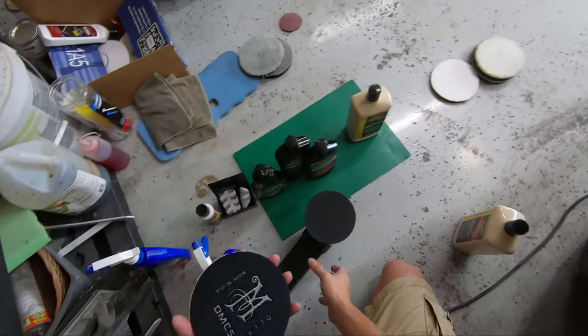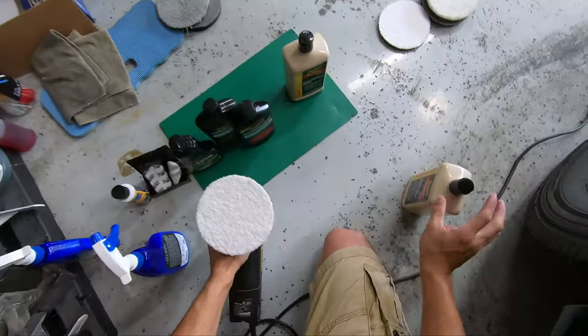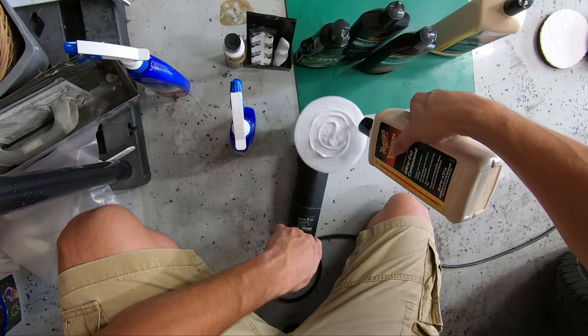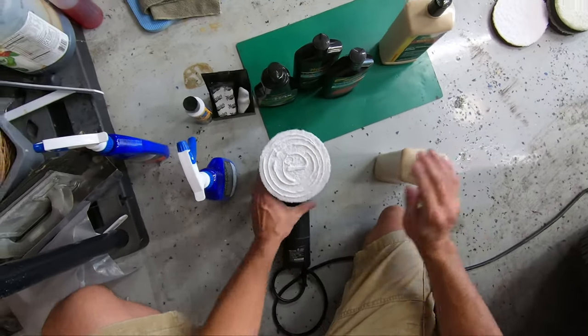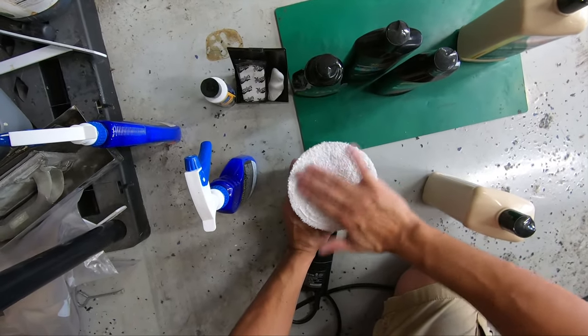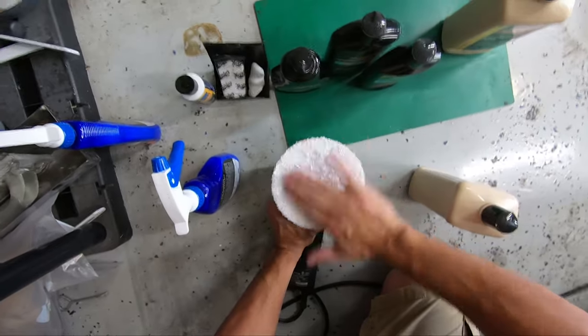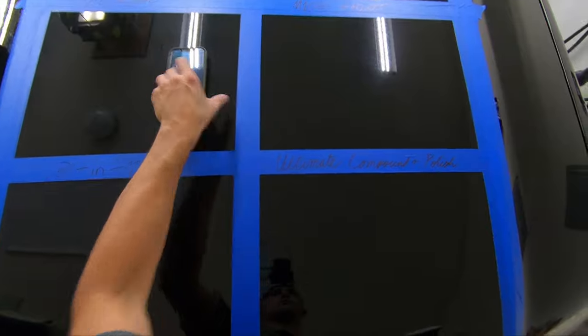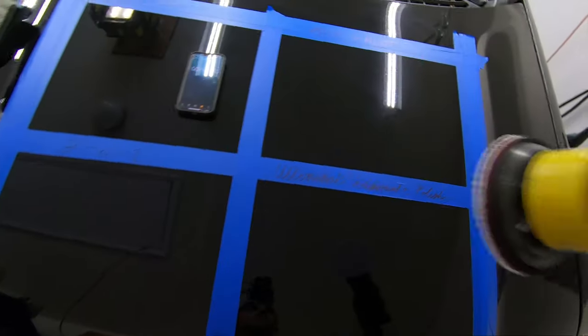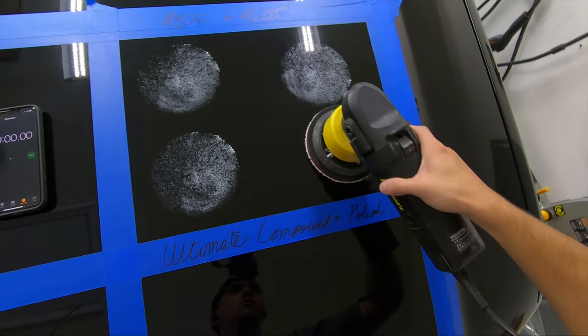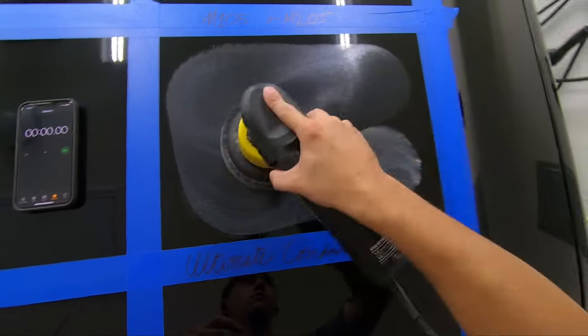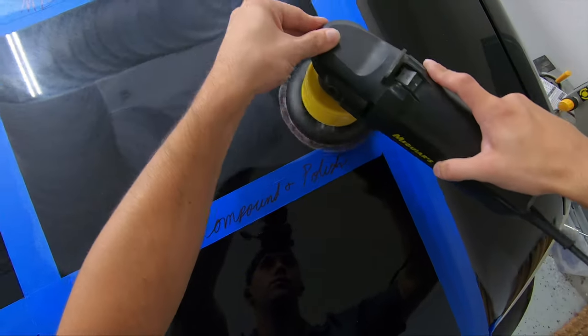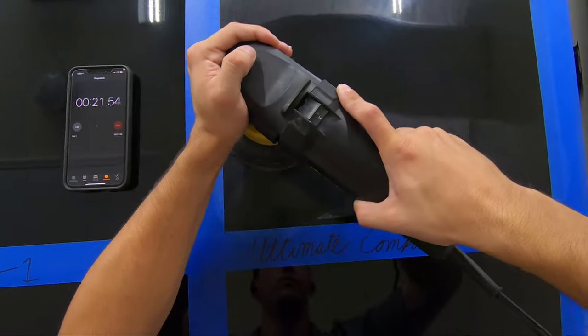Next up is M105 on a cutting pad. You'll notice that I primed the pad by putting compound on it, then rubbing it into all the fibers. This ensures there are no dry spots with the compound. It seems two minutes with the M105 is a bit too long as it got too hot and effectively dried the compound to the paint, which would require either excess scrubbing to get it off, spraying with ONR and then wiping it up, or going over the surface again with fresh compound and wiping it up, something I'm not going to do because that skews the results of the test.